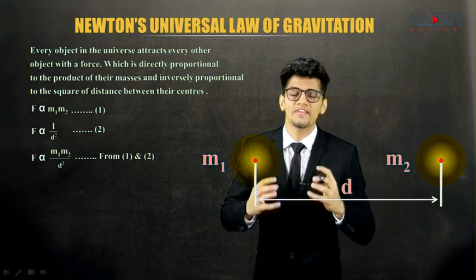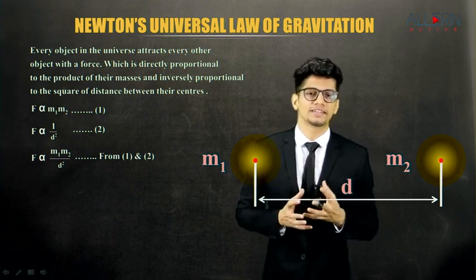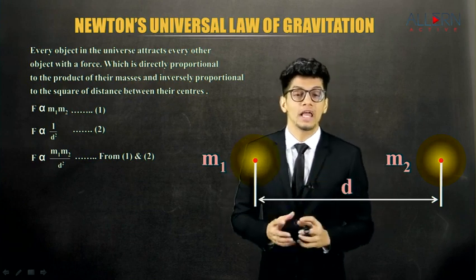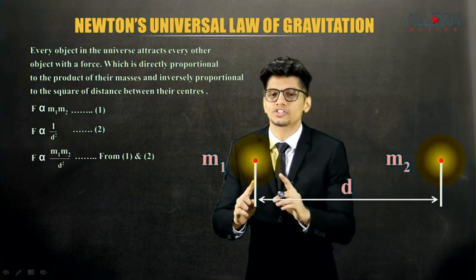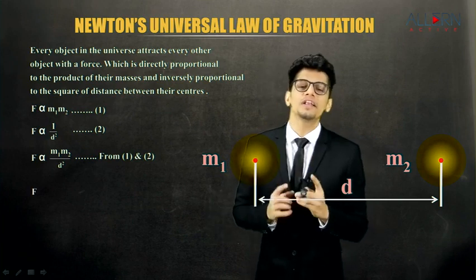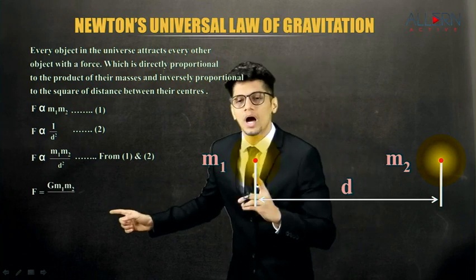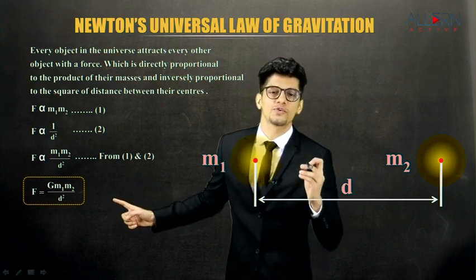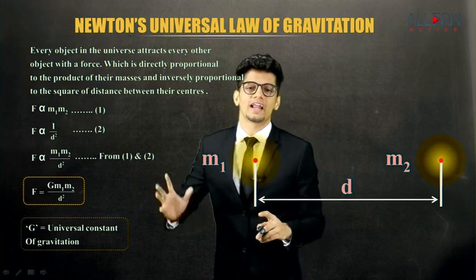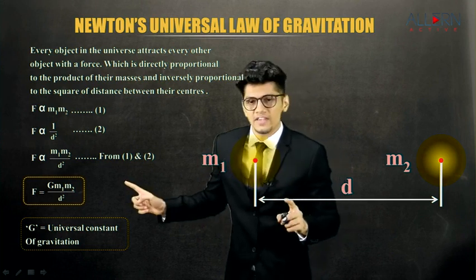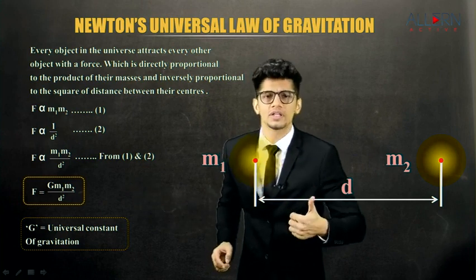We cannot use the proportionality sign in numericals, so we need to replace it with an equals sign. To do that, we add a constant of proportionality — in this case, capital G. So we get the formula: F is equal to G m1 into m2 upon d square. This is the formula for the force of attraction, where capital G is called the universal constant of gravitation.